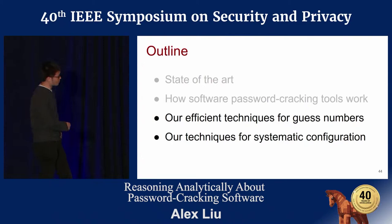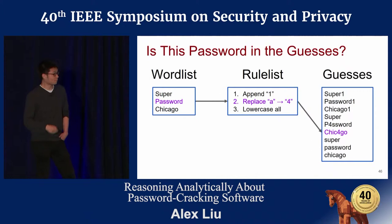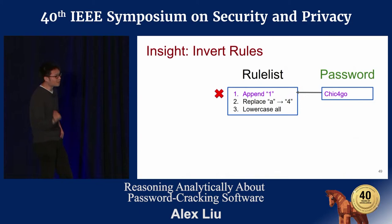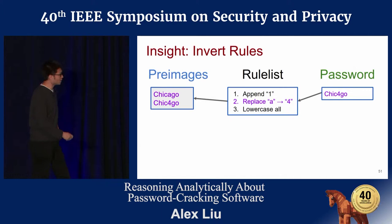First, I'll show you how we estimate the guess number efficiently. Normally you check whether a password is cracked in the forward direction, which requires enumeration. Our insight is we can go backwards. Suppose you have the password 'chic4go' — will it be guessed by the first rule? Obviously not, since chic4go doesn't end with a digit. Will it be guessed by the second rule? Likely yes. So what words need to be in the wordlist to guess chic4go? We call these words pre-images. In this example there are two possible pre-images, and either will be transformed into the password after applying the second rule. This saves a lot of time: instead of making millions of forward guesses, we just do two lookups in the wordlist.